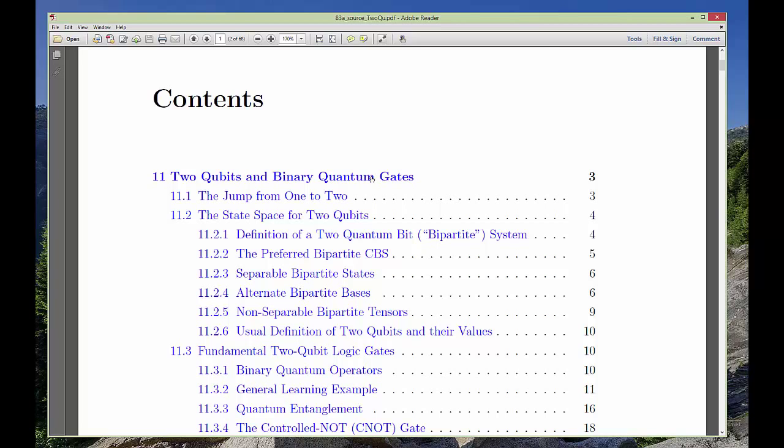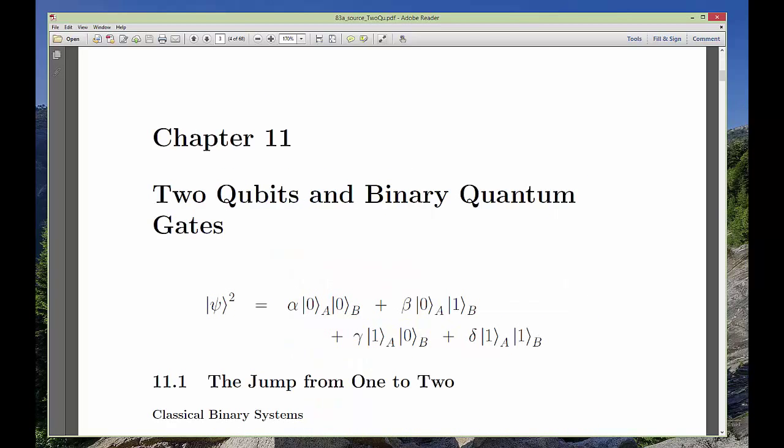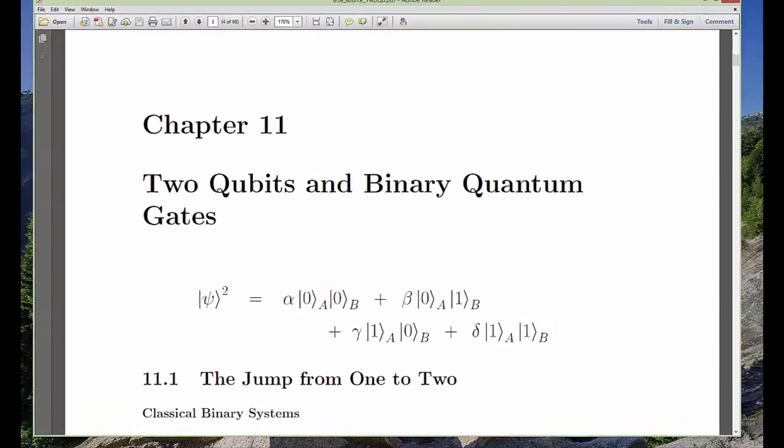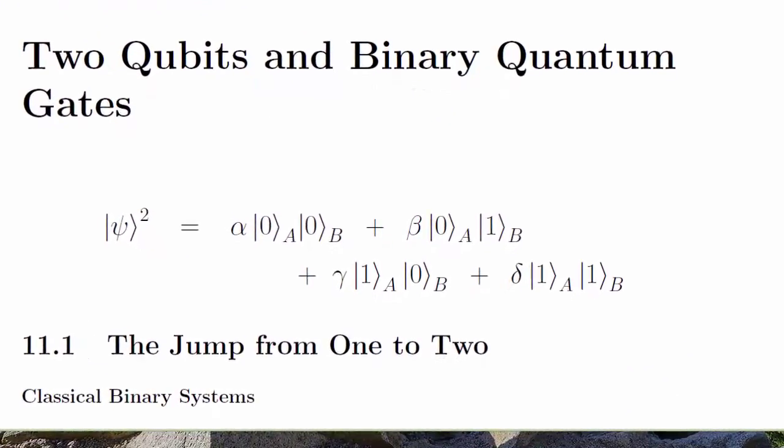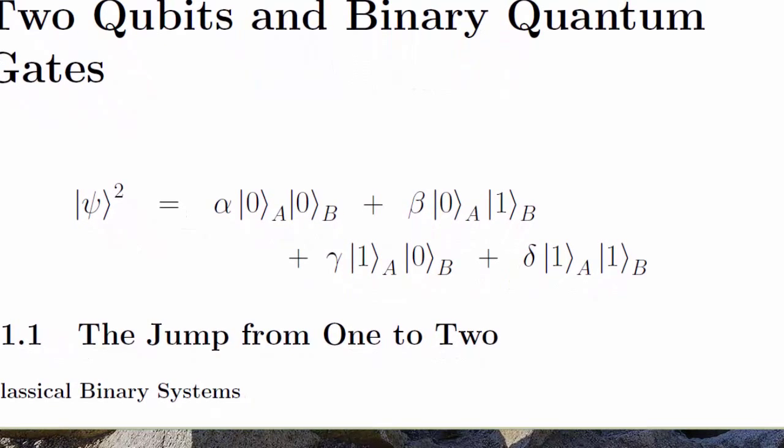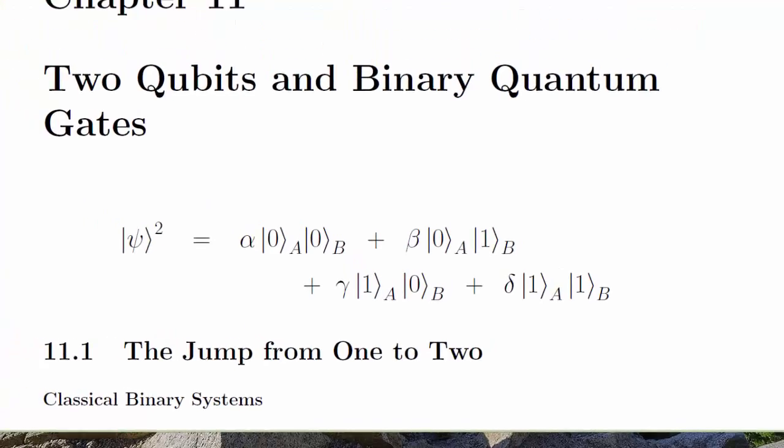Today we enter the strange world of non-locality, the preparation of two separate qubits whose quantum states are inextricably bound by the marriage of quantum entanglement. Inextricably, that is, until we take a measurement, at which point, divorce.